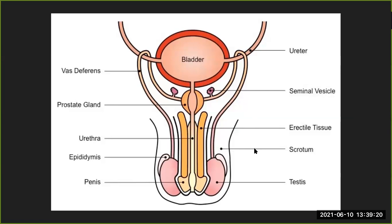The same structures are shown here in a simplified representation from the front view. This is the bladder; just below the bladder you have the prostate gland, and below the prostate gland at the base you have the Cowper's gland, which is another type of gland involved in the secretions of the male reproductive system. These are the seminal vesicles, and we will see the type of canal through which the vas deferens enters — that is the inguinal canal.